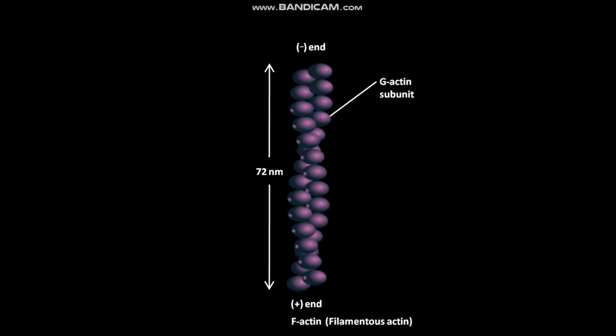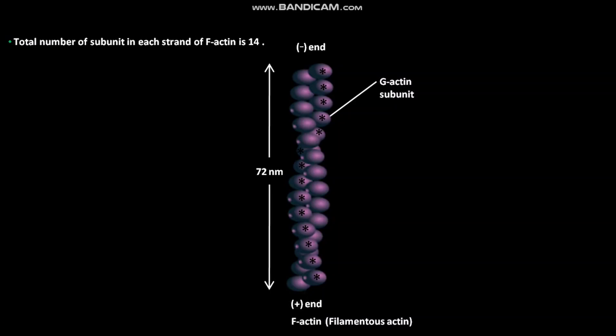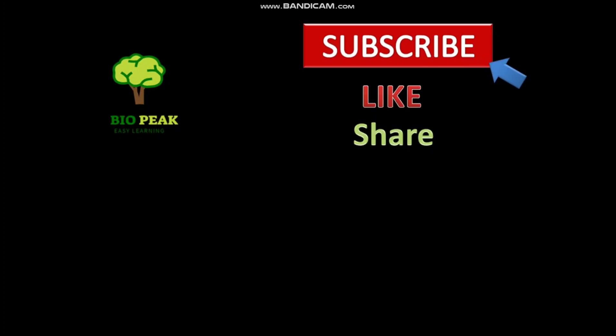One F-actin has two strands of G-actin subunits. Here, one of the two strands is demarcated with stars and the other is not. The total number of G-actin subunits in each strand of F-actin is 14, so one F-actin consists of 28 G-actin subunits.